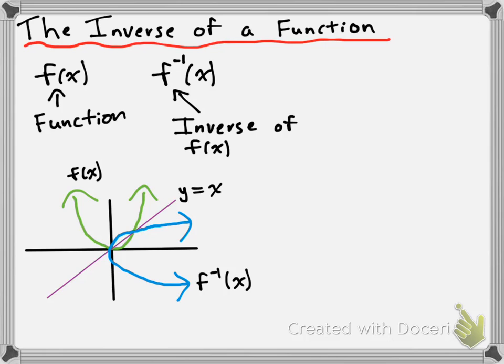You also found out that the x values and y values are switched between a function and its inverse. So if you were to make a table of values for f of x and then a table of values for f inverse of x, all the x values for f of x would be the y values for f inverse of x, and all the y values from f of x would be the x values from f inverse of x. Another way of saying that is that the domain and range of f of x get switched in f inverse of x. So the domain of f of x is the range of f inverse of x, and the range of f inverse of x is the domain of f of x.